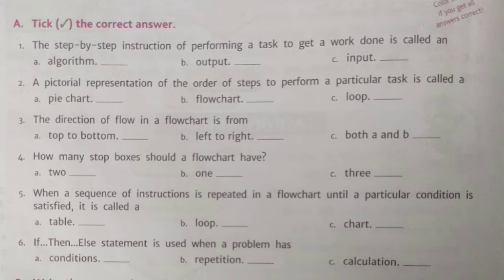Question number 2. A pictorial representation of the order of steps to perform a particular task is called a dash. The options are pie chart, flowchart, and loop. As we know, flowchart is the pictorial representation of an algorithm. So we can tick on option B, flowchart.